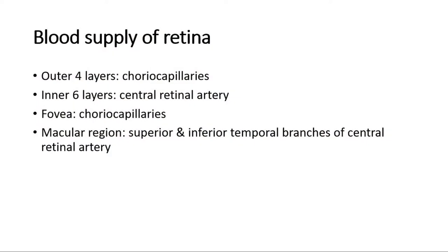First, I'll briefly explain the blood supply of the retina. We know that there are 10 layers of the retina, and the outer four layers are supplied by chorocapillaries, whereas the inner six layers are supplied by the central retinal artery, which is the main topic we are going to discuss today. The fovea is supplied by chorocapillaries, and the macular region is supplied by the superior and inferior temporal branches of the central retinal artery.